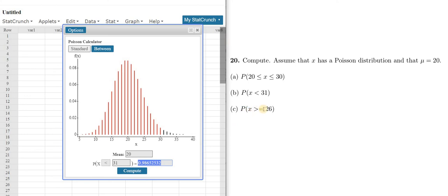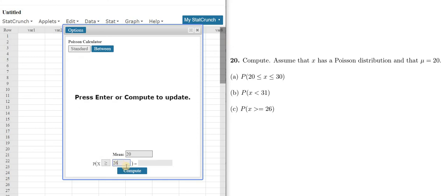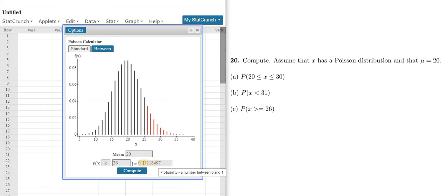For part C, it says x greater than or equal to 26. So same thing. We just go here. We change this to greater than or equal to. And then we enter the number 26. Everything looks good. Then click Compute. And so there we are, 0.1122.